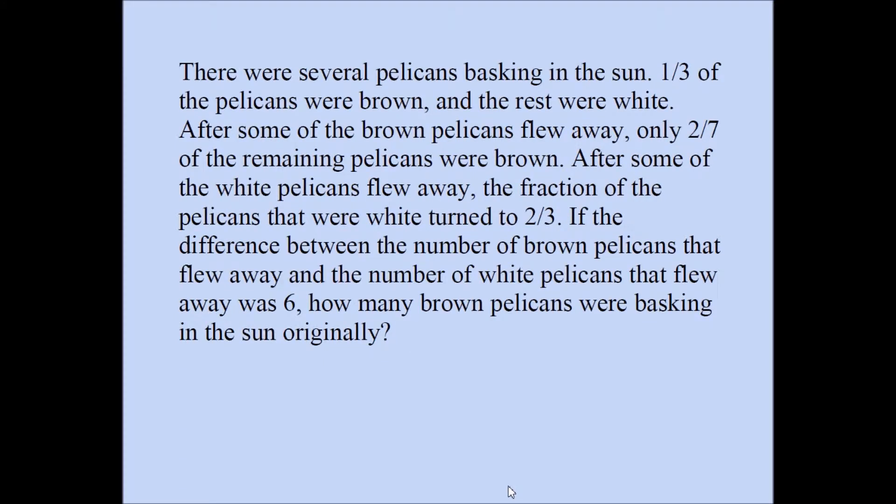There were several pelicans basking in the sun. One third of the pelicans were brown and the rest were white. After some of the brown pelicans flew away, only two sevenths of the remaining pelicans were brown. After some of the white pelicans flew away, the fraction of the pelicans that were white turned to two thirds. If the difference between the number of brown pelicans that flew away and the number of white pelicans that flew away was six, how many brown pelicans were basking in the sun originally?